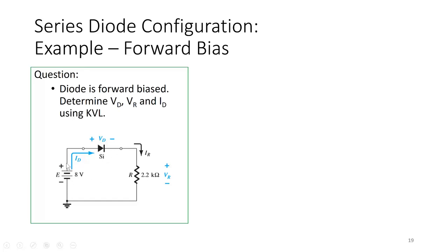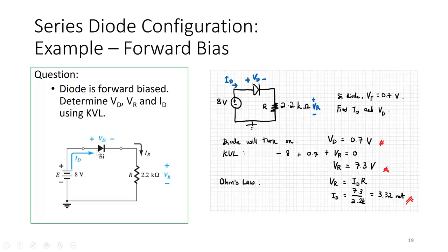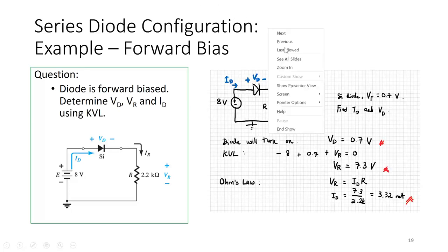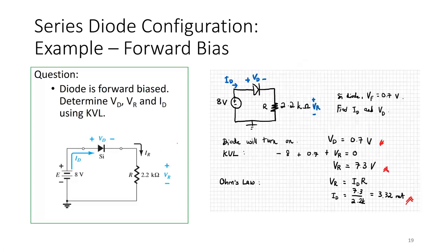The positive terminal of the 8-volt source is connected to the positive terminal of the silicon diode. A silicon diode is typically 0.7 volts. There could be some variation in these values but it's close to 0.7 volts. If it's not stated in the question but it is stated that it is a silicon diode, you can assume it is 0.7 volts. Otherwise, if stated otherwise, take the value that is given.